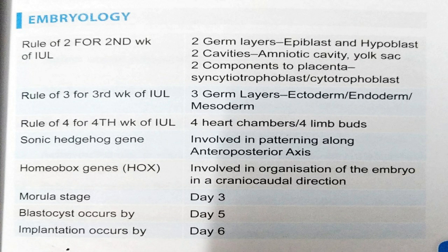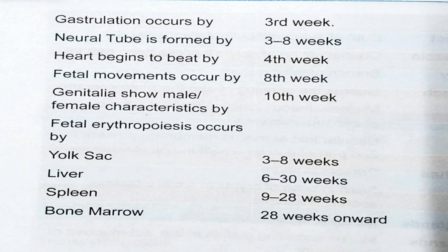Key developmental stages: morula stage is on day three; blastocyst occurs by day five; implantation occurs by day six; gastrulation occurs by the third week of pregnancy; and the neural tube is formed by the third to eighth week of intrauterine life.